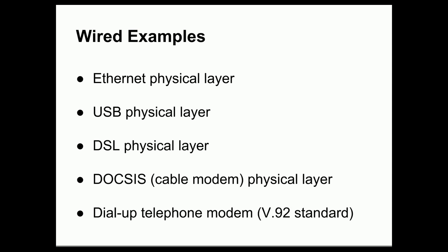Looking at examples of different types of physical layers: in wired networks, we have the Ethernet physical layer for standard Ethernet connections. USB, or Universal Serial Bus, also has a physical layer specification that defines what the connector looks like and how it's designed, allowing all USB devices to interoperate. Digital Subscriber Line, or DSL, has a physical layer. Cable modems have a physical layer as part of the DOCSIS standard. And even dial-up telephone modems had a physical layer as part of the V.92 standard.